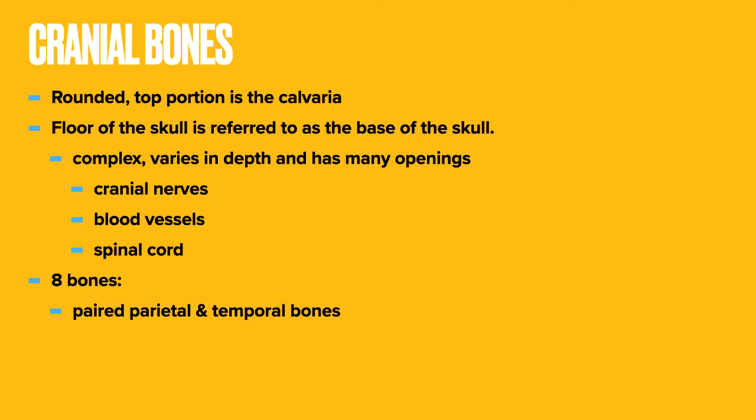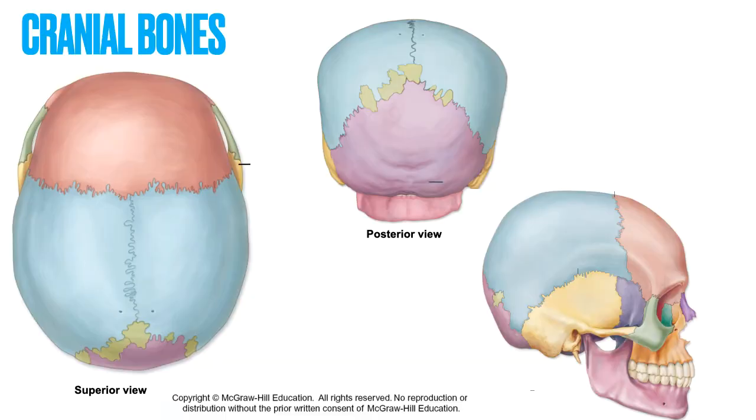There are eight bones that make up the cranial bones. These include paired bones — the parietal and temporal bones — as well as the unpaired bones: the occipital, sphenoid, and ethmoid bones.